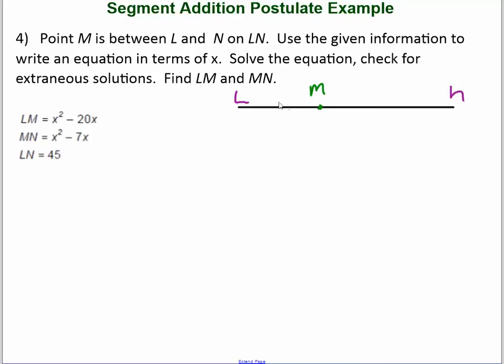LM is x squared minus 20x. So we're going to go ahead and write that in. x squared minus 20x. And this is x squared minus 7x. And of course the whole thing is 45. So what we're going to do is the segment addition postulate of this part plus this part is equal to 45.